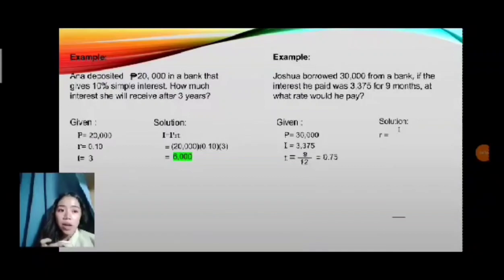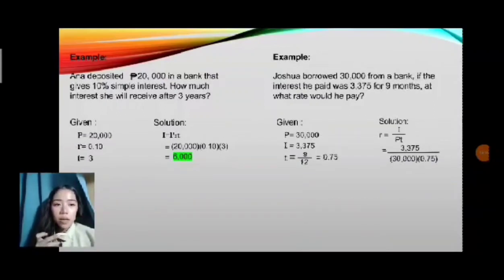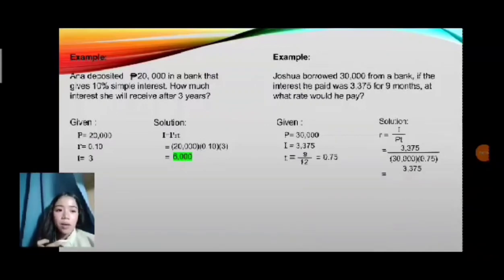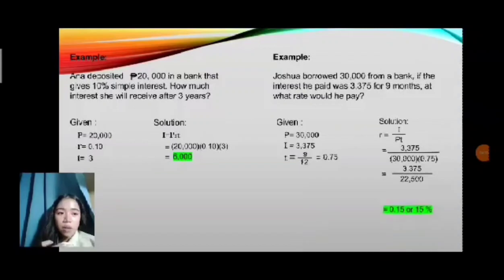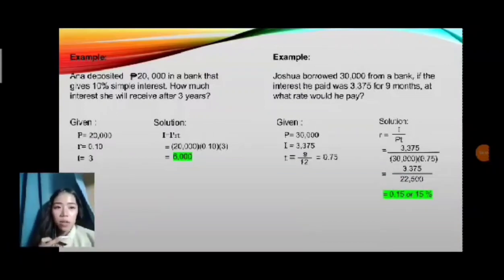Solution: the formula is R equals I over (P times T). So, 3,375 over (30,000 times 0.75). First, solve 30,000 times 0.75, which equals 22,500. Then 3,375 over 22,500 gives us the rate. That concludes this topic. Thank you very much.